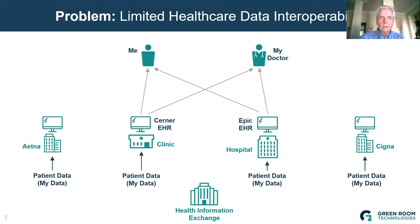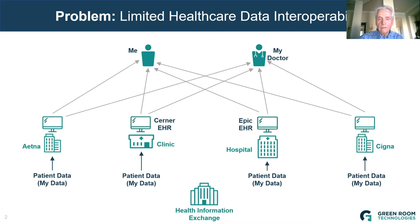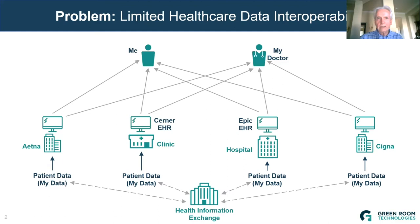Similar problems existed with the insurance industry. My medical claims were only available to me through software provided by the insurance company. At the bottom of the diagram, there's a need to transfer patient data from healthcare organizations to another or to insurance companies. This would be done in the past by fax, proprietary data formats, or by digital messages or digitized documents conformed to earlier HL7 standards. Health information exchanges were created to improve the sharing of data, but it was very complex.